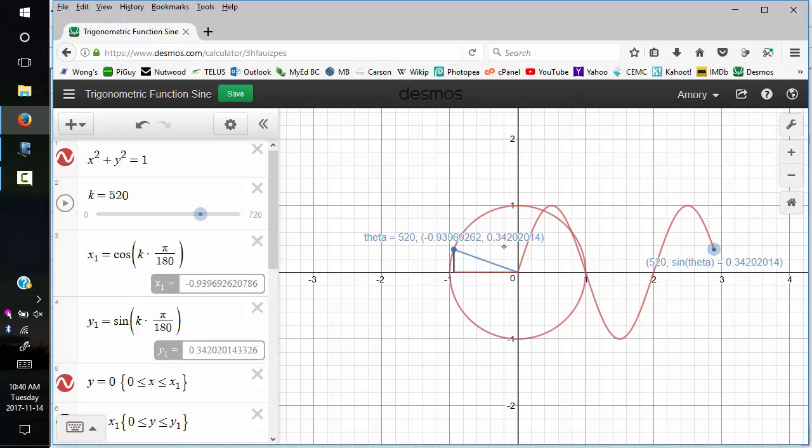Sine is the y-value. That's 0.34. You can see that we have 0.34 here. We've had 0.34 here. We've had 0.34 here. 0.34 here.